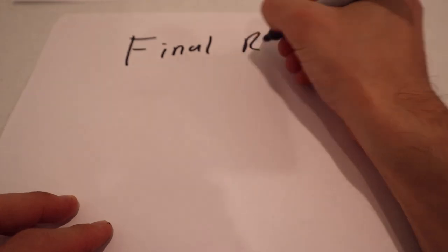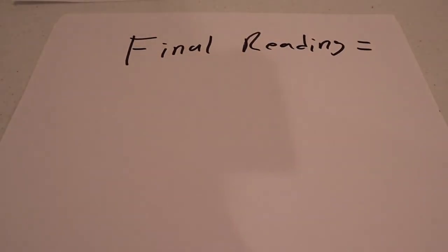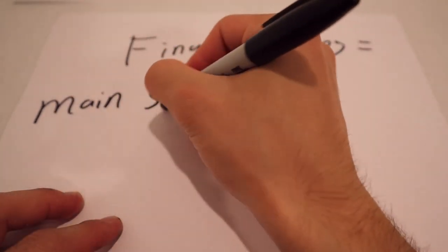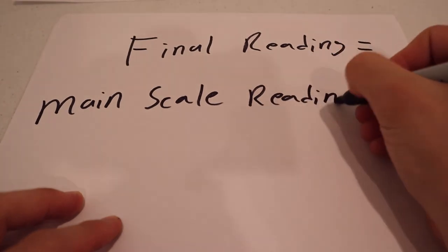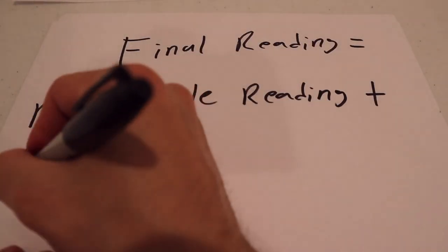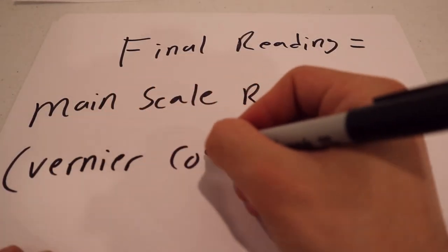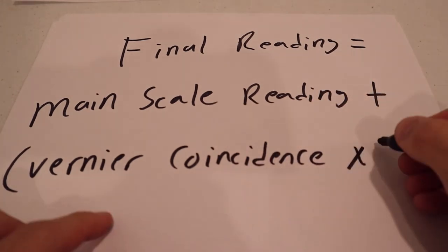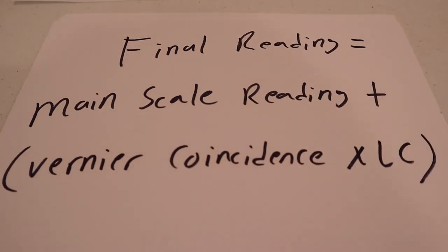Now, to find the final measurement for the width of the block, we simply take the main scale reading and add it to the vernier coincidence of 11 multiplied by the least count value of 0.05 mm. This makes our final reading 88.55 mm.